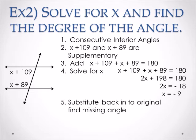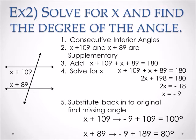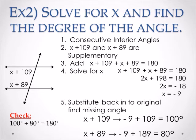Substitute negative 9 back into both expressions to find the two missing angles. Negative 9 plus 109 gives us 100 degrees, and negative 9 plus 89 gives us 80 degrees. As a check: 100 degrees plus 80 degrees equals 180 degrees, which must be true because they are consecutive interior angles.